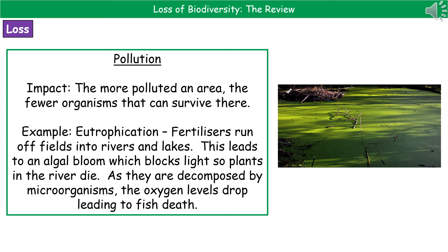The final factor we need to look at is pollution. The general pattern is that the more polluted an area is, the fewer organisms can actually survive there. A really good example of this is the process of eutrophication. This occurs when farmers spray their fields with fertilizers and those fertilizers then run off the fields into lakes and rivers. As a result, the lakes and rivers have a lot more nitrate content, which means the algae present then has an algal bloom — they reproduce in large quantities. The entire surface gets covered with algae, which blocks sunlight from getting down into the water, so the plants in the river or lake end up dying.